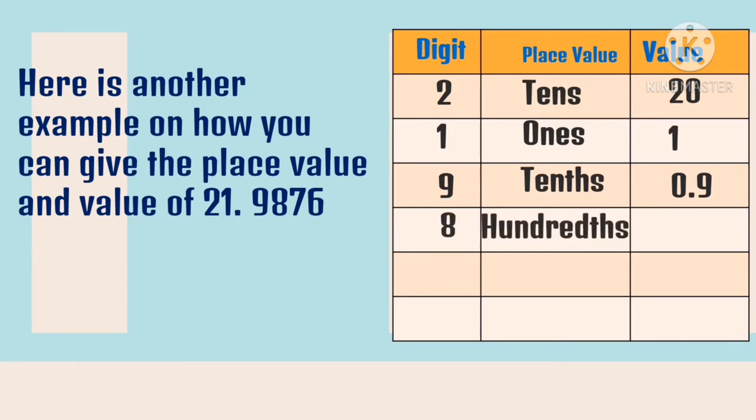Then digit eight. Again, we'll place a zero as the placeholder for the tenths place. Next is the digit seven. The place value of seven is thousandths and its value is seven thousandths.